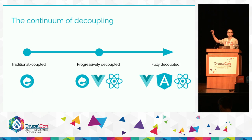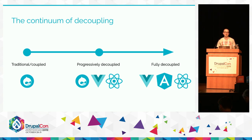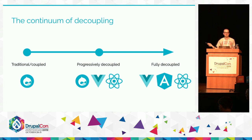A fully decoupled site is on the opposite side of the spectrum, where Drupal is purely an API, a data repository, a content hub, and you use a framework or library like Vue, Angular, or React to handle front end routing, content changes, and UI stuff through client-side JavaScript. Progressive decoupling exists in the middle — a happy place where we use Drupal for what it's really good at, and then add a layer of JavaScript on top to do more dynamic application-like stuff that Drupal isn't necessarily so good at.